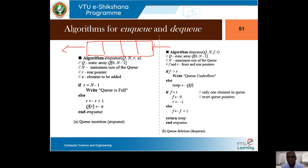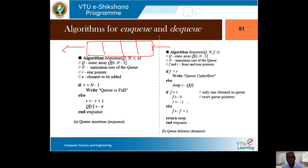There are varieties of algorithms available for circular queues, but we will use the best and simplest one — easy to remember and without global variables. This will be discussed in the next session. Thanks for watching; please join the next session on circular queues.